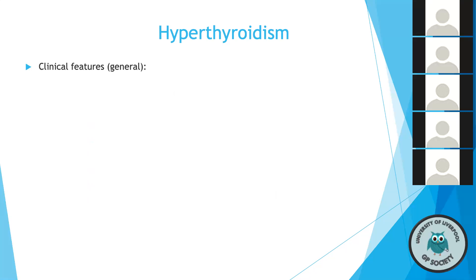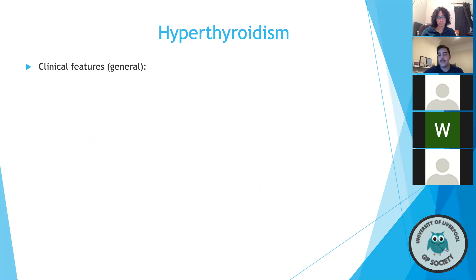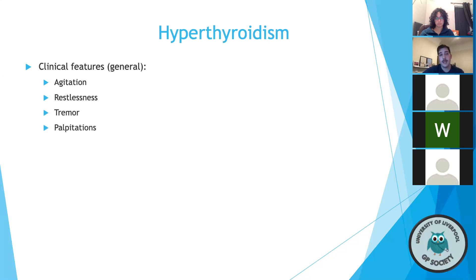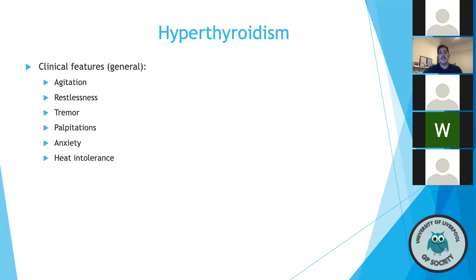Moving on to clinical features of hyperthyroidism: going back to thyroid physiology, the thyroid gland controls metabolic rate. When the metabolic rate goes up, patients may present with agitation, restlessness, tremor, palpitations, and anxiety — all making sense because of increased stimulation of muscles and the heart from excess thyroid hormone running around the body. Patients also have heat intolerance, meaning they feel uncomfortably warm when others don't.